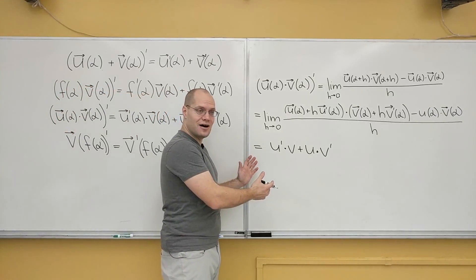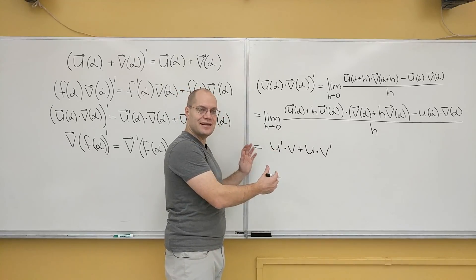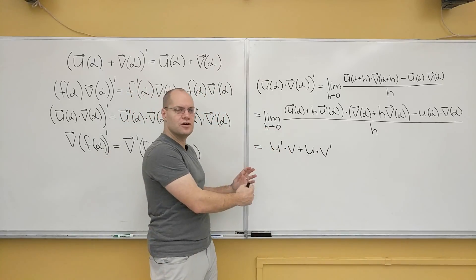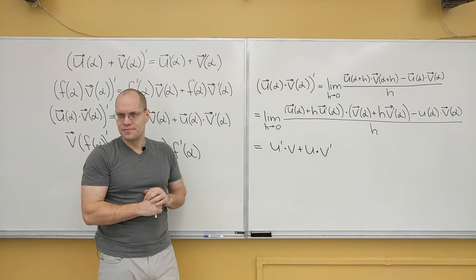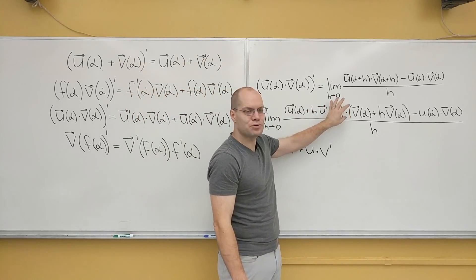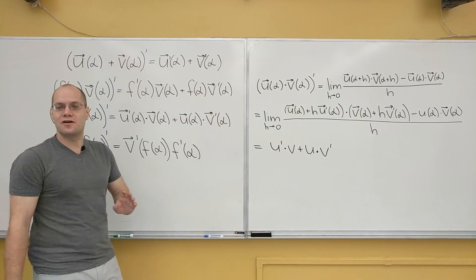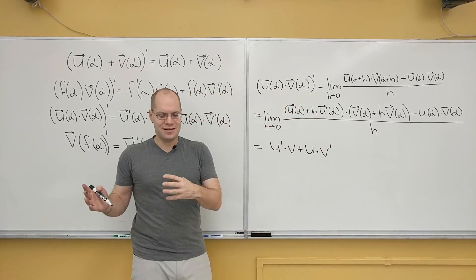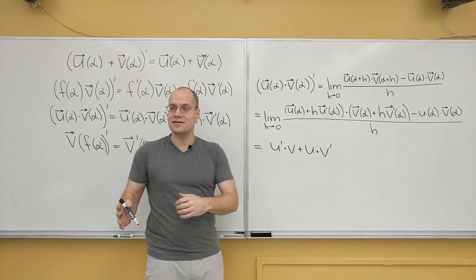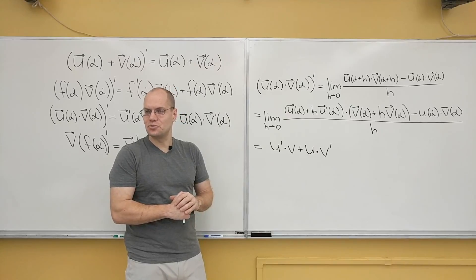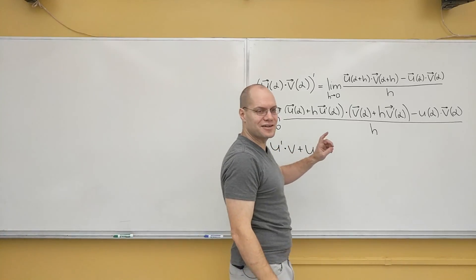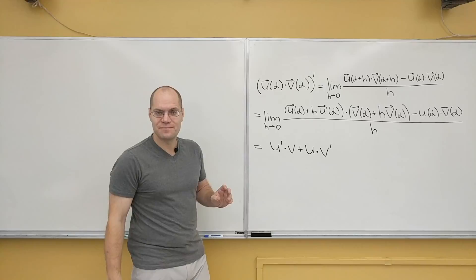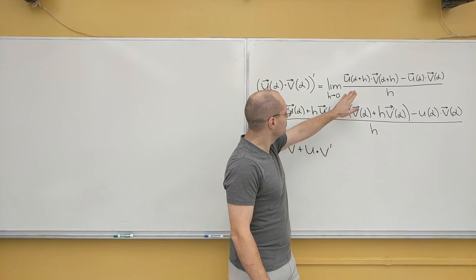What you just saw was a demonstration that ideas from calculus, as applied to ordinary functions of one variable, carry over to vector-valued functions. Just for completeness, so we don't have to use the approximate Taylor series, let me show how a mathematician would have done it — an exact argument. We'll start from the limit definition. Here's the trick to avoid any mention of series or approximation: I'll add and subtract a clever term.